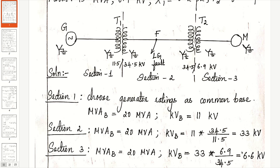Using the new base values in various sections, you have to convert the given per unit values of the reactances into the new per unit value using the formula: X per unit new is equal to X per unit old multiplied by (MVAB new / MVAB old) multiplied by (KVB old squared / KVB new squared).